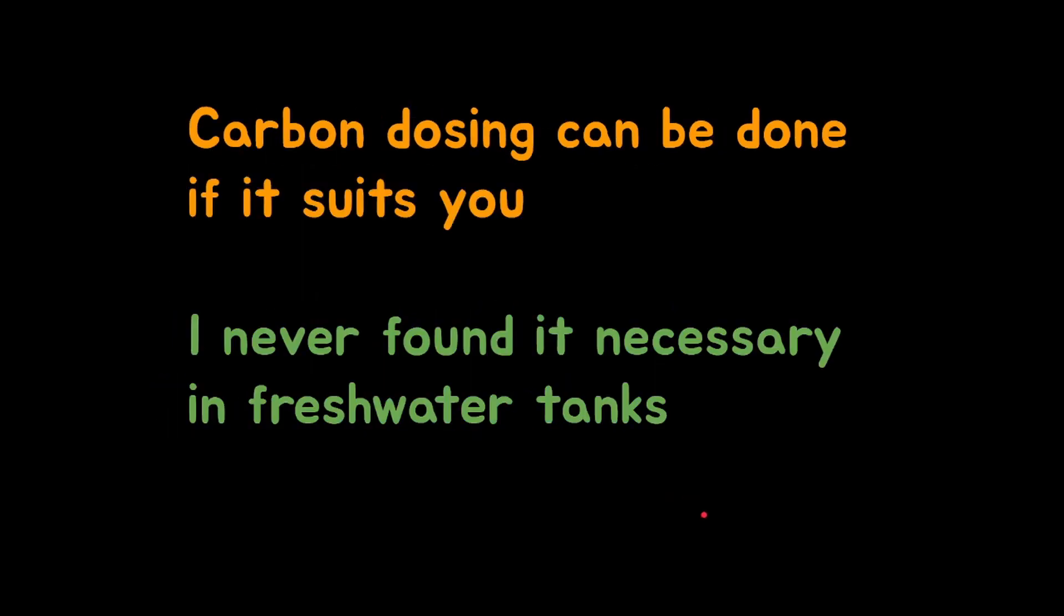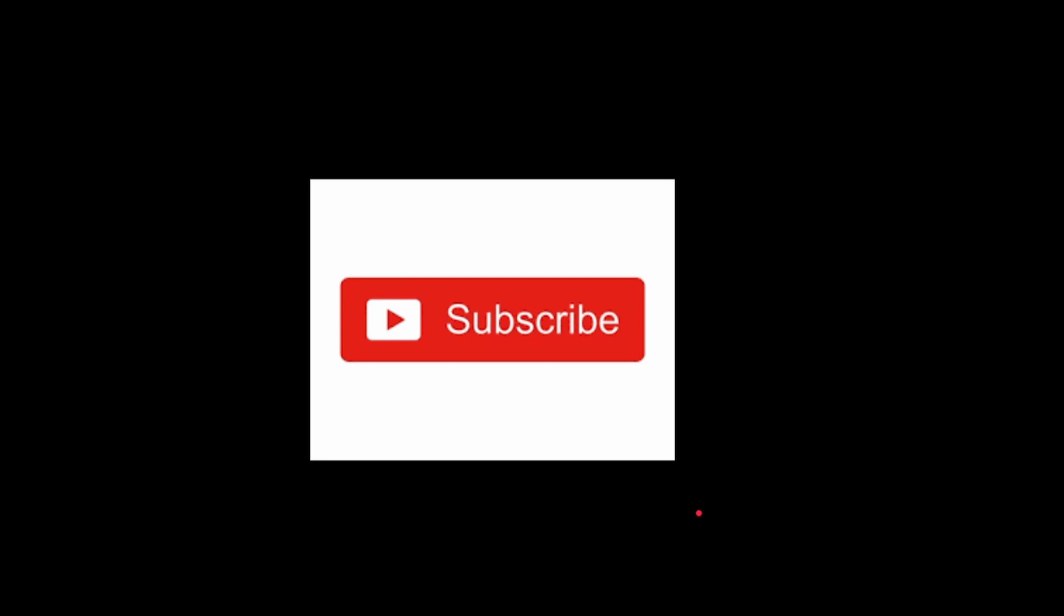So carbon dosing is something that can be done safely. If done well, if it suits you, you can do it just fine. For me, I just never found it necessary, especially in freshwater tanks. So I never do it regularly. I just did this experiment to actually figure out if it actually works and turns out it does with some side effects. So yeah, that is the end of my experiment. That is the conclusion. Carbon dosing works, but I never found it necessary. And it has a side effect of increasing ammonia. Thanks for watching. Subscribe if you want to see more experiments like this, and you want more tips on how to make no water change tanks.